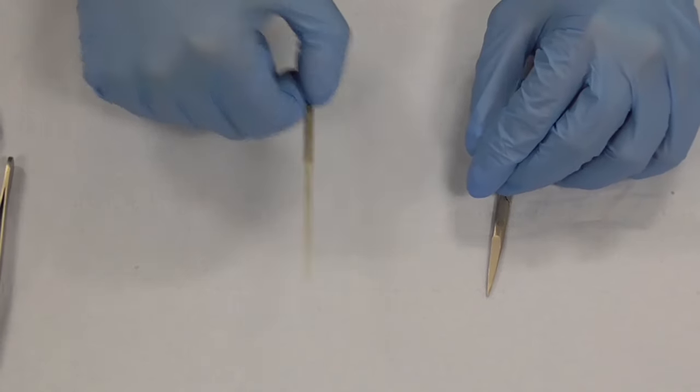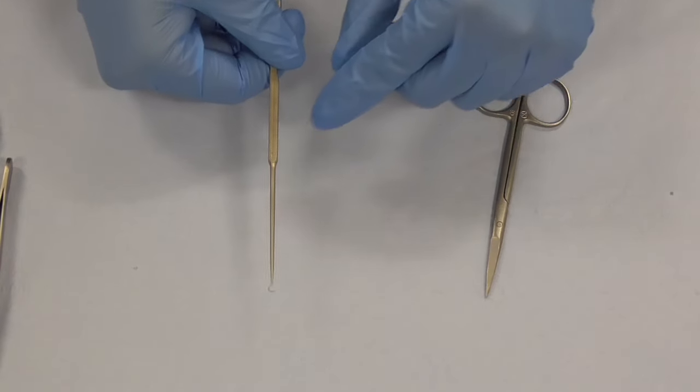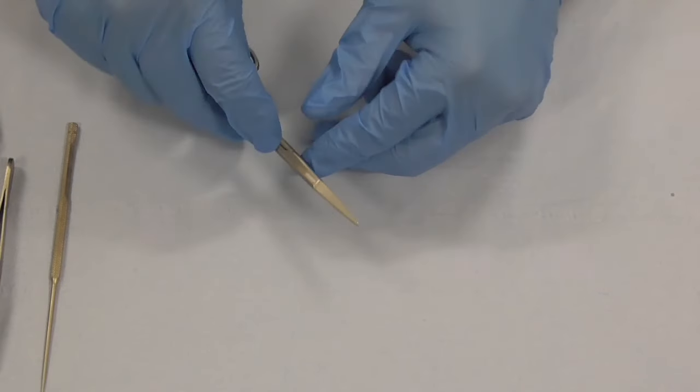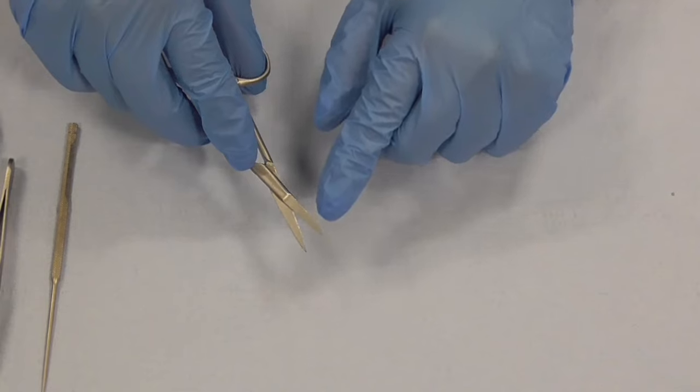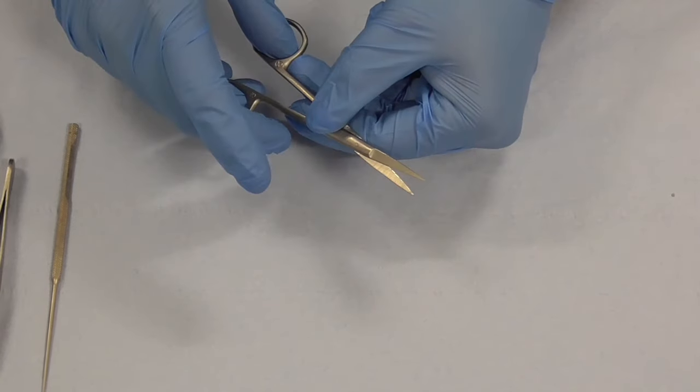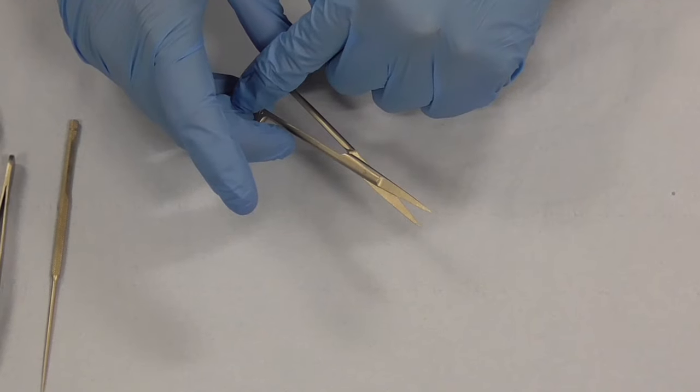So that's your dissecting forceps, that's your skin hook which is as it says on the tin, a hook for the skin. And the final thing is our suture cutting scissors and a suture cutting scissors is just a normal pair of straight scissors and again you hold it like you hold your needle holder, thumb and ring finger.